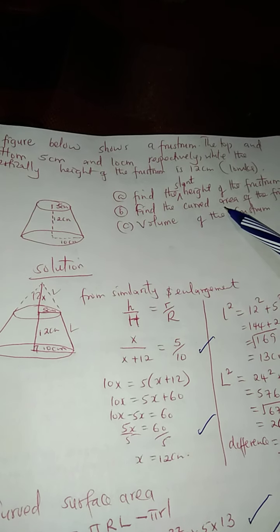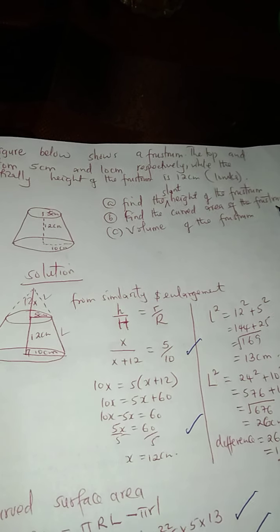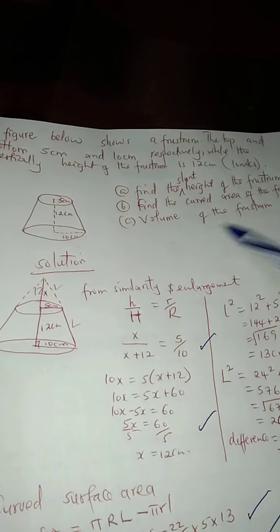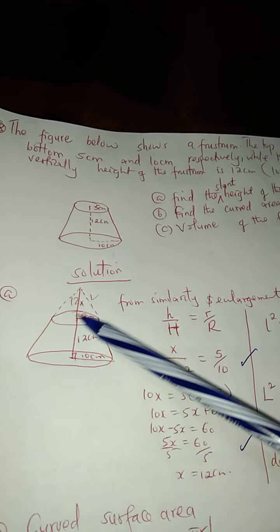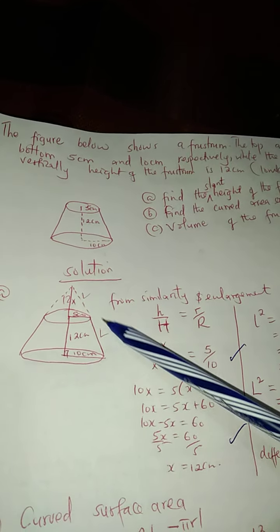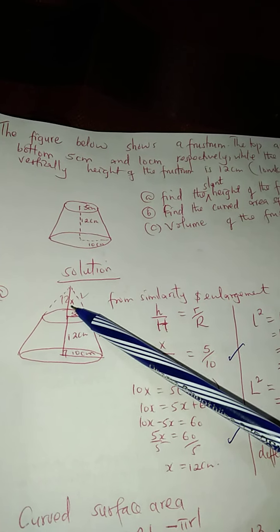Find the curved surface area. Find the curved area for the frustrum. Also, the volume of the frustrum. From the first thing, we will make this cone to be full, the way it was before the upper part was cut.